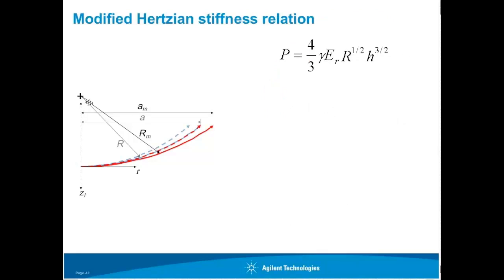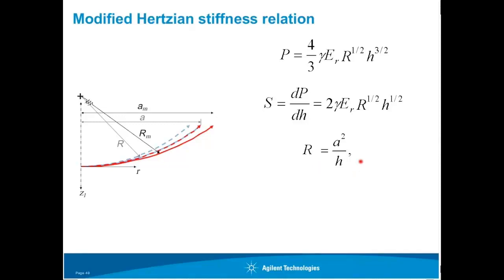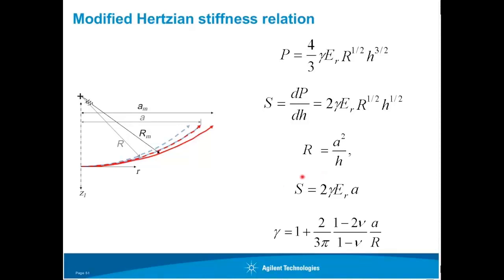Now let's look at how this gamma factor comes through in the stiffness equation. Beginning with our modified force-displacement relation, we take the derivative of force with respect to displacement. Remembering the relationship between indenter radius, contact radius A, and displacement — substituting A² / h for R — that gives us the stiffness in terms of contact radius, which is just like the general Sneddon relation discovered by Oliver and Pharr, except for this little factor gamma. For Hertzian contact, gamma is given by this expression. So the form of our stiffness equation is intact, but we have this correction factor gamma.